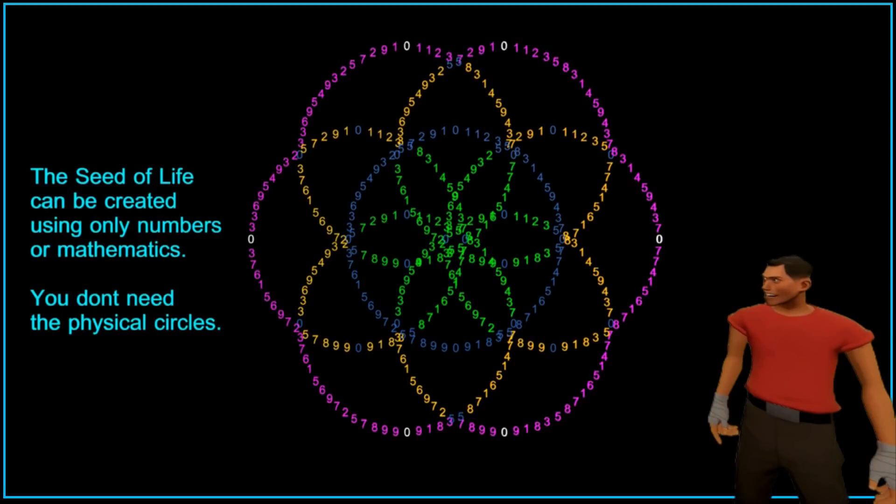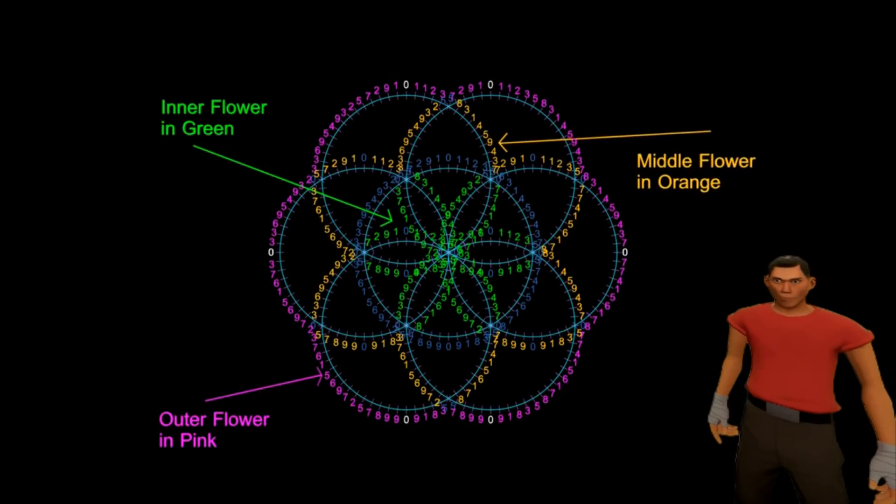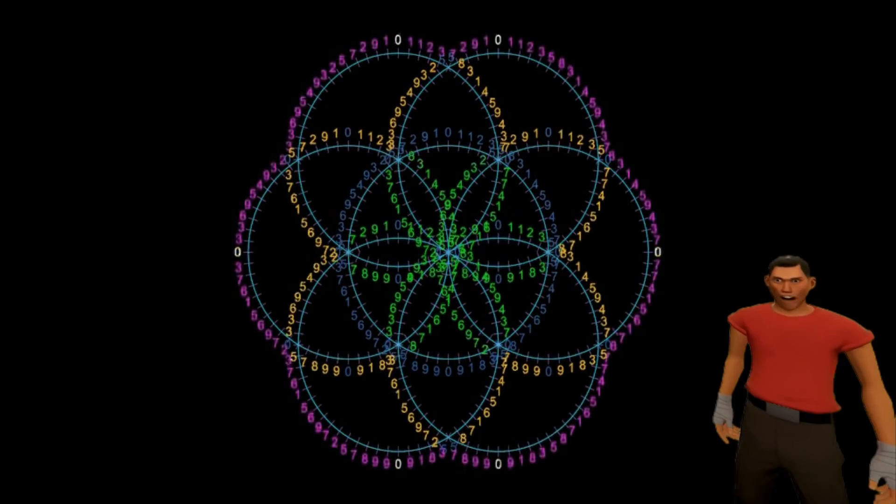Mathematics is making flowers of numbers out of a design we have always known as the seed of life. Look at this. In this design, there are three flowers embedded or encoded into the seed of life.